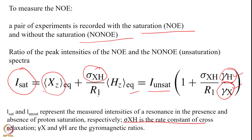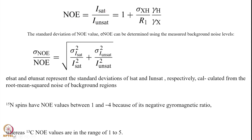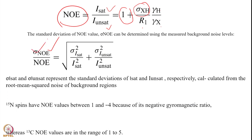σ_XH is the rate constant of the cross-correlation, and γ_H and γ_X are gyromagnetic ratios. The NOE is given by I_sat divided by I_unsat, where we saturate for about 3 seconds in one case and do not saturate in the other. This comes out to be 1 + (σ_XH / R1) × (γ_H / γ_X). The error in the measurement of NOE is: σ_NOE / NOE = √(σ²(I_sat)/I²_sat + σ²(I_unsat)/I²_unsat).